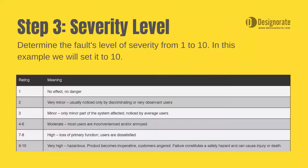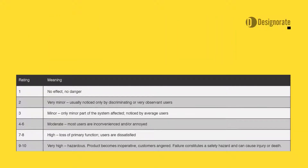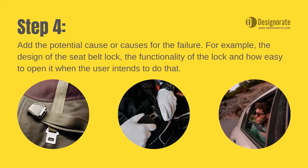Step 3: The severity level. Determine the fault's level of severity from 1 to 10. We will set it to 10. Step 4: Add the potential cause or causes for the failure. For example, the design of the seat belt lock and the functionality of the lock, and how easy it is to open when the user intends to do that.